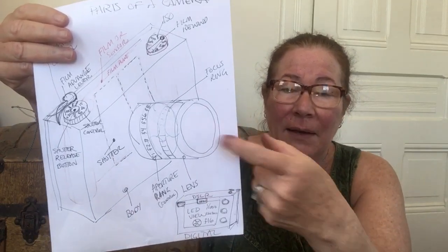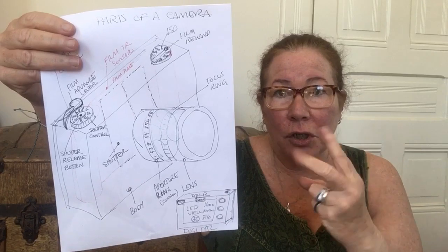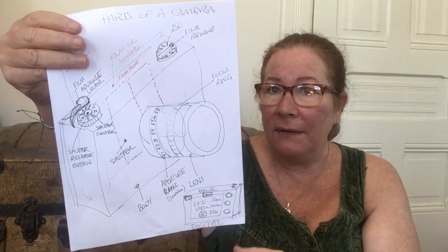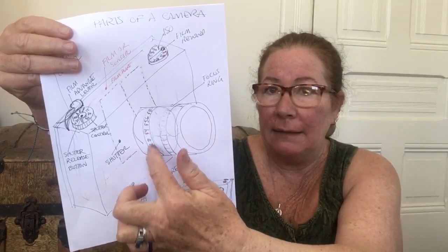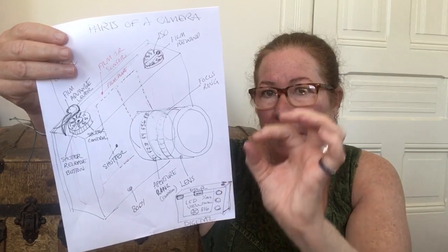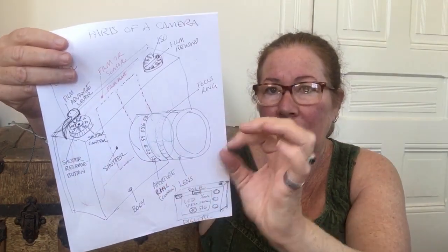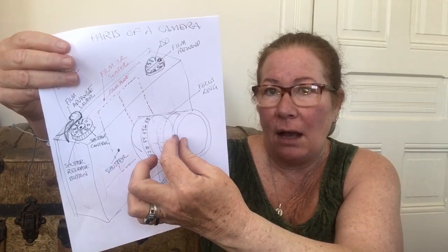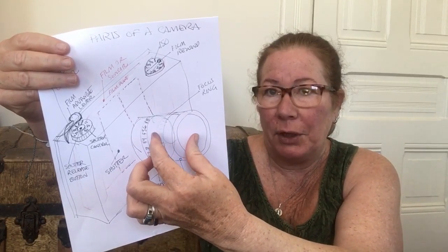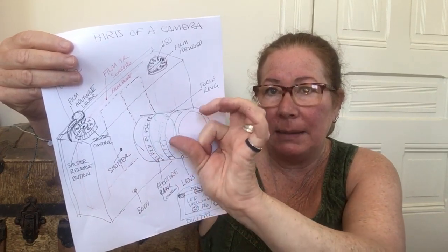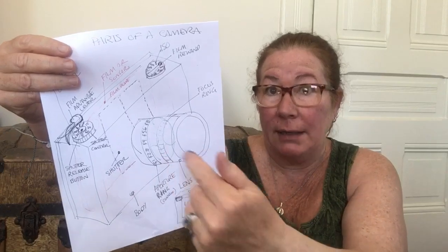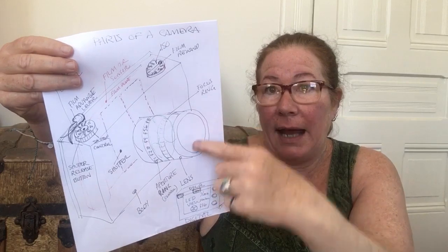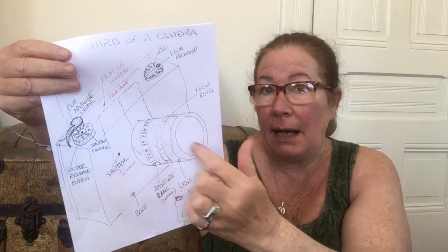Inside the body and the lens are two of the most important controls in your camera. One is called the aperture, which is normally located inside the lens. It's a series of overlapping metal leaves that can change the opening in size — like a little diaphragm that can open or close to make a very small hole or a bigger hole for the light to come in through the lens. You can change the size of that aperture.